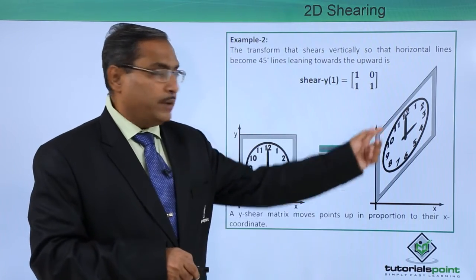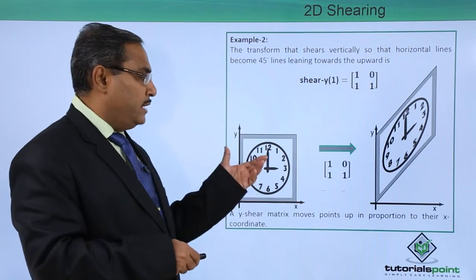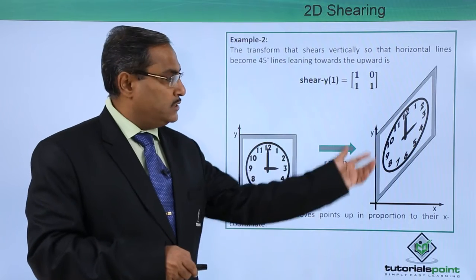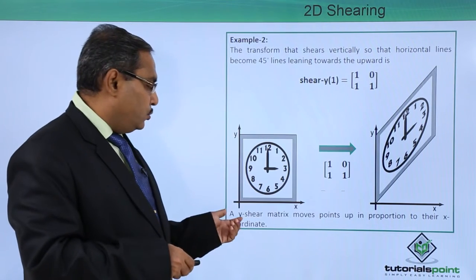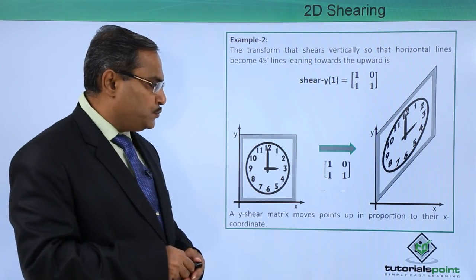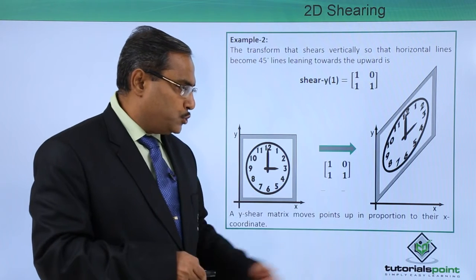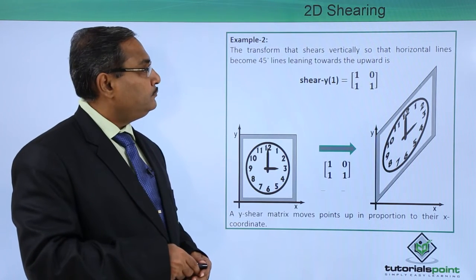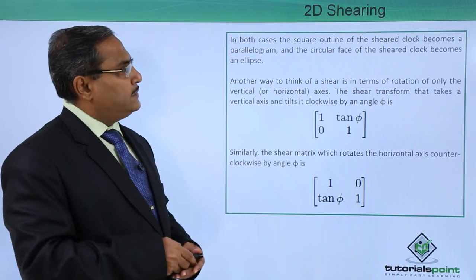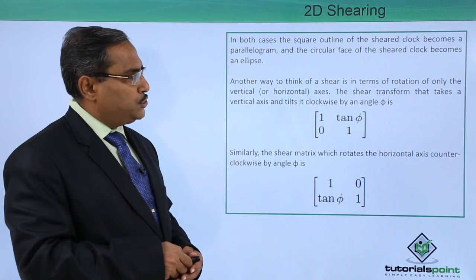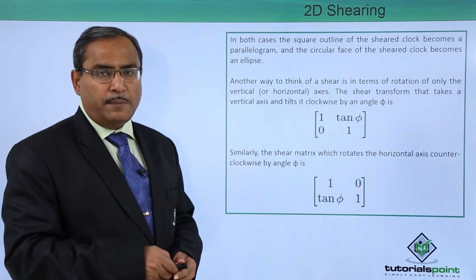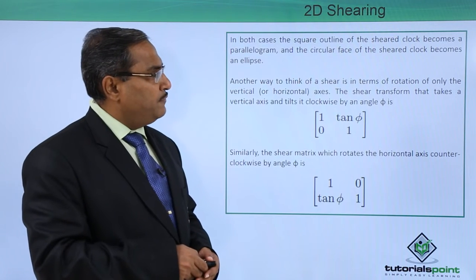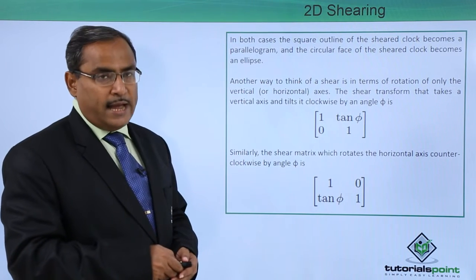That is why we are getting this 1. And in this way, the respective this diagram, this particular picture has got sheared in this way. A y-shear matrix moves points up in the proportion to their x coordinates. In both cases, the square outline of the sheared clock becomes a parallelogram. And the circular face of the sheared clock becomes an ellipse.